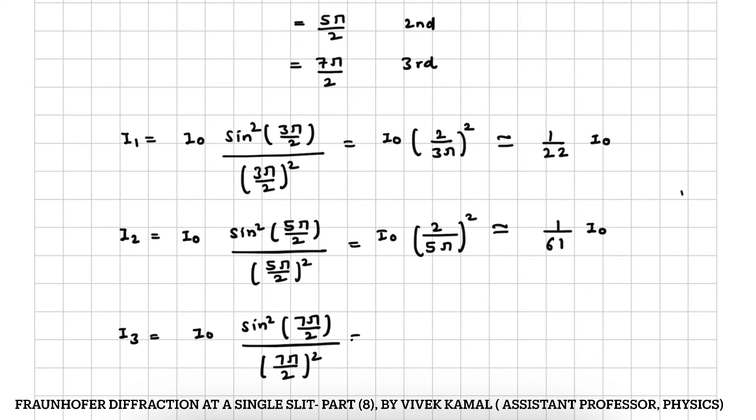This will be equal to I0 into 2 divided by 7 pi square. This is nearly equal to 1 by 121 I0.